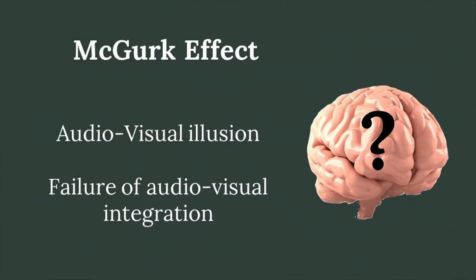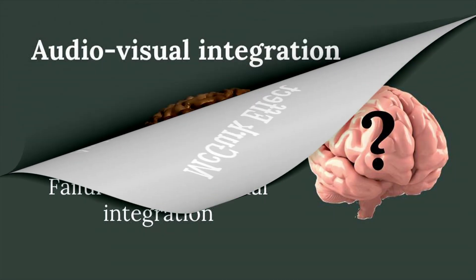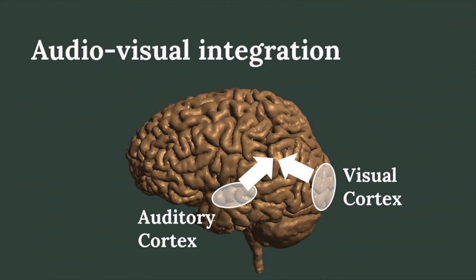The McGurk effect is an audio-visual illusion where the brain doesn't know what to do with two conflicting inputs from what it sees and from what it hears. The brain wants to integrate both bits of information, but in this case it cannot do it. This McGurk effect has been very valuable for psychology and neuroscience, because it is used to study how the brain integrates visual and auditory signals.